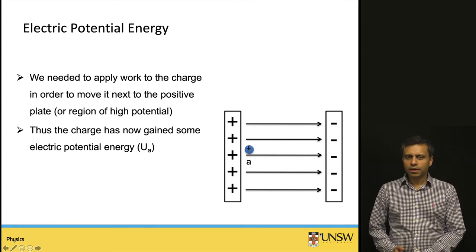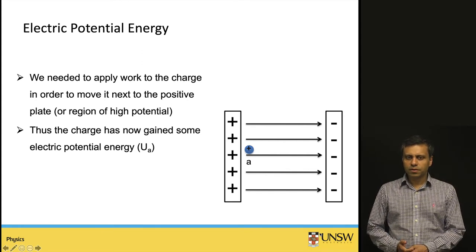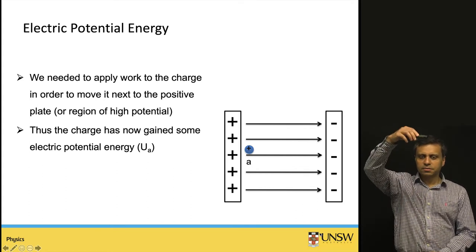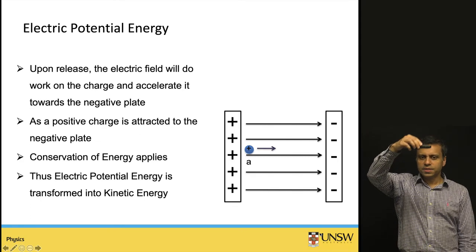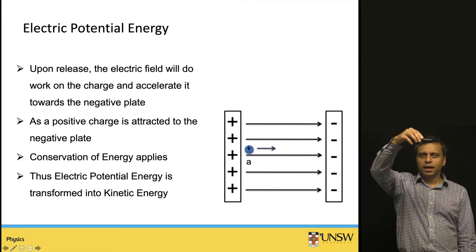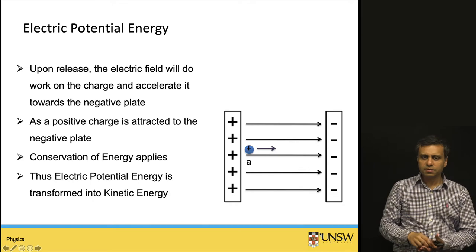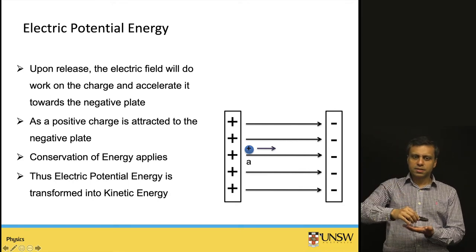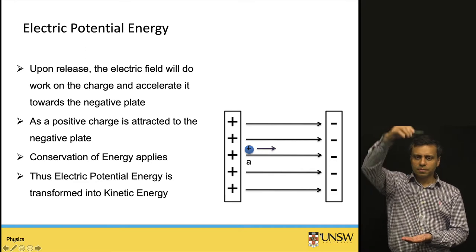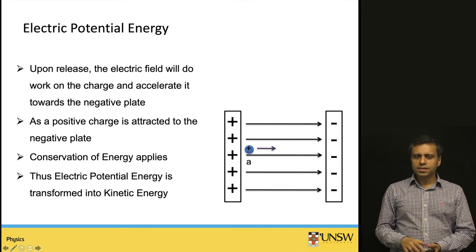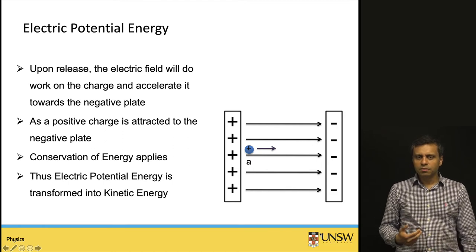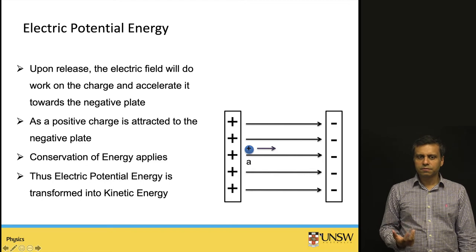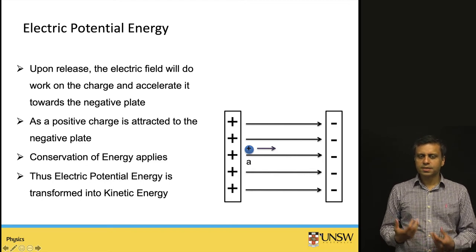An analogy with the gravitational field: when we raise an object to a greater height, we do work on it and it gains potential energy. When we let it go, it falls, its velocity increases, and its potential energy decreases as its height from the ground decreases. Similarly here, the force causing this effect is electric rather than gravitational, but the effect in essence is the same.